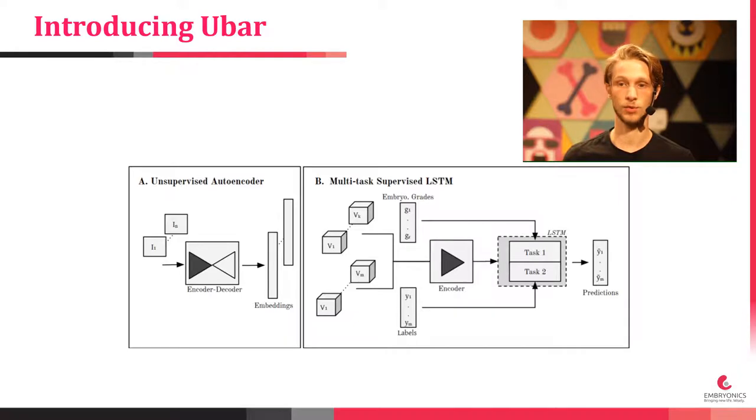UBA is an algorithm designed to improve the success rates of IVF by accurately predicting the probability of implantation from videos of the developing embryos.